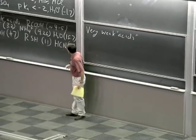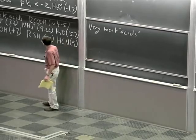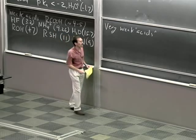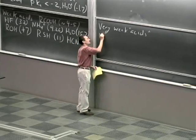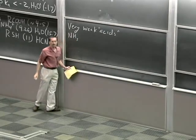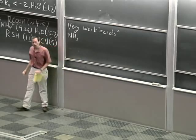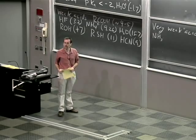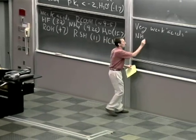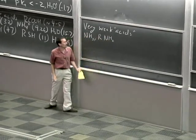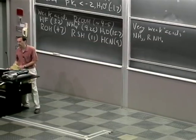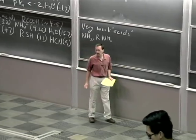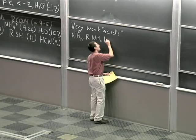Just like water is amphoteric, ammonia is amphoteric. NH3 can act either as a base or an acid. If it acts as a base, we pick up a proton to form ammonium ion. But as an acid, it gives up a proton to form amide anion, NH2−. Ammonia is the archetype for various amines just as water is an archetype for alcohols. So I'll put next to ammonia RNH2 — that's a primary amine — and also R2NH, a secondary amine. The pKa of ammonia and of primary and secondary amines is about 38.